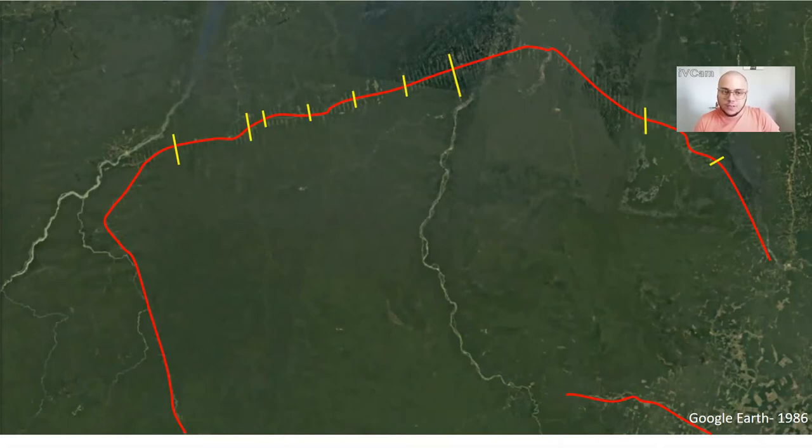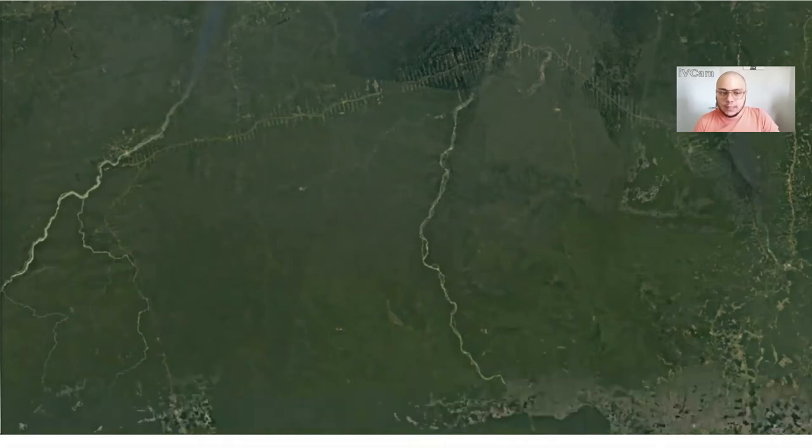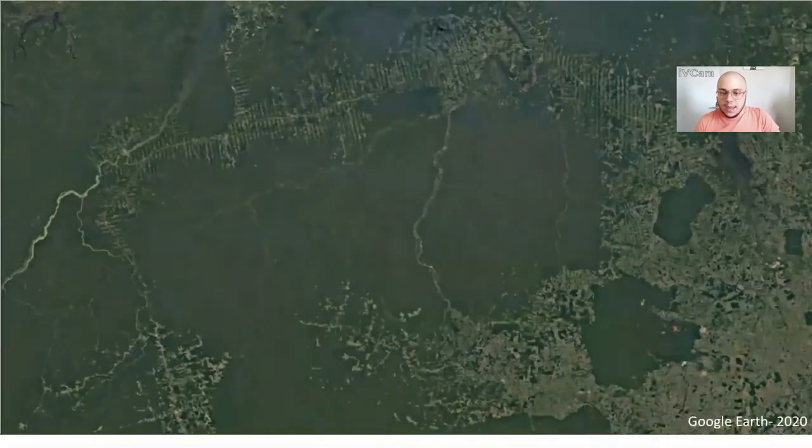The pattern of deforestation is called fishbone and in some years it can completely change the landscape, as we can see here in the same region nowadays.